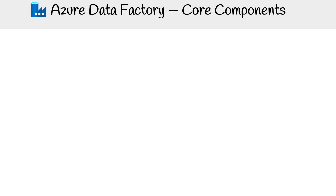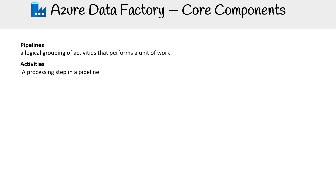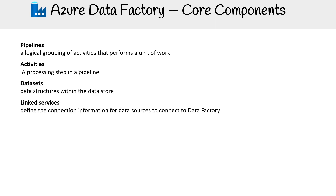Let's break down the components so we have a better idea of how this thing works. Pipelines are a logical grouping of activities that perform units of work. Activities are a processing step in the pipeline. Datasets are data structures within the data store. Linked services define connection information for data sources to connect to the data factory.